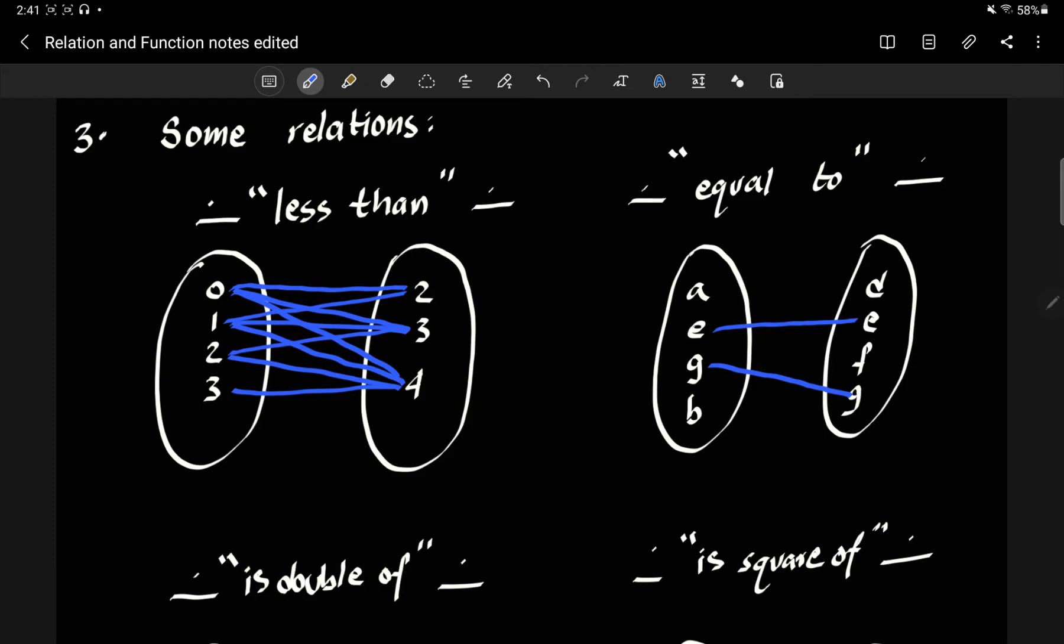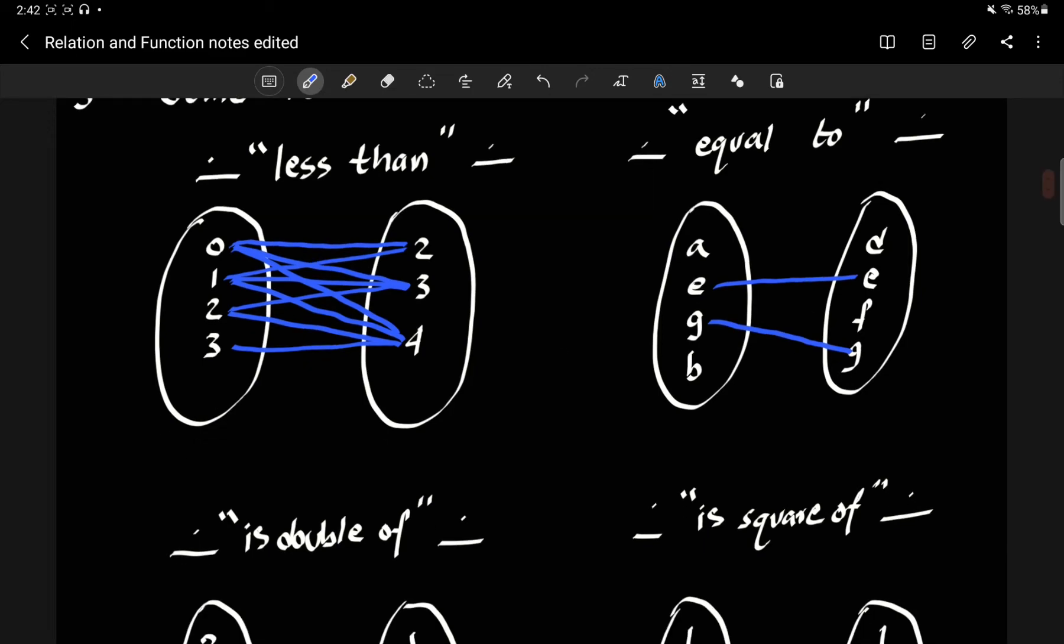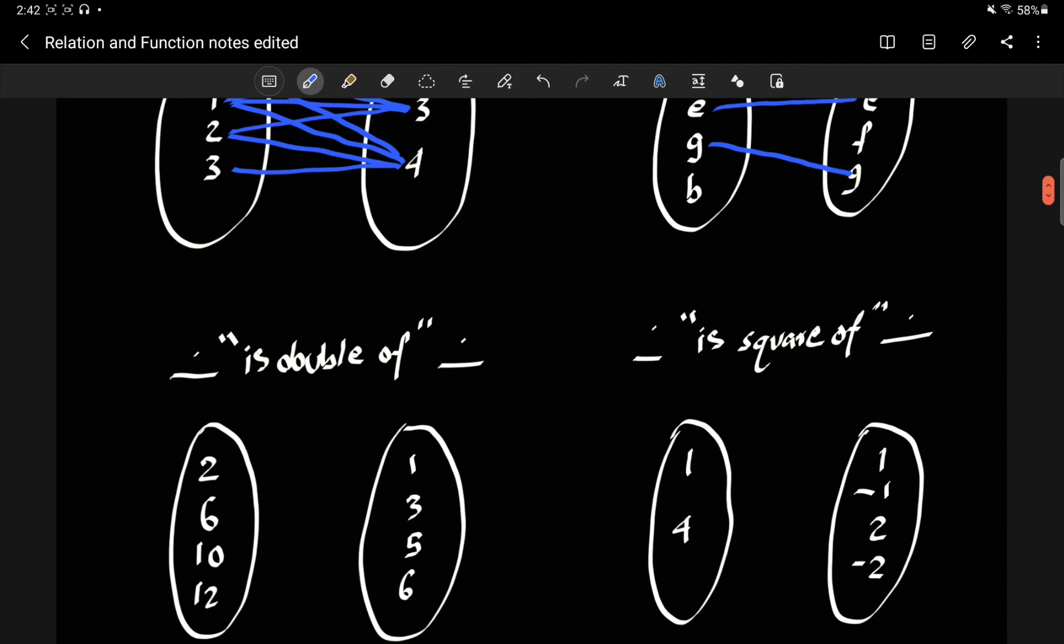So what I want you to look here in these four cases are what kind of lines are we drawing? You know, what are the various things that are happening? The next relation is, is double of. Okay, 2 is double of 1 and 1 only. 6 is double of 3, 10 is double of 5. So we have a straight through connection here.